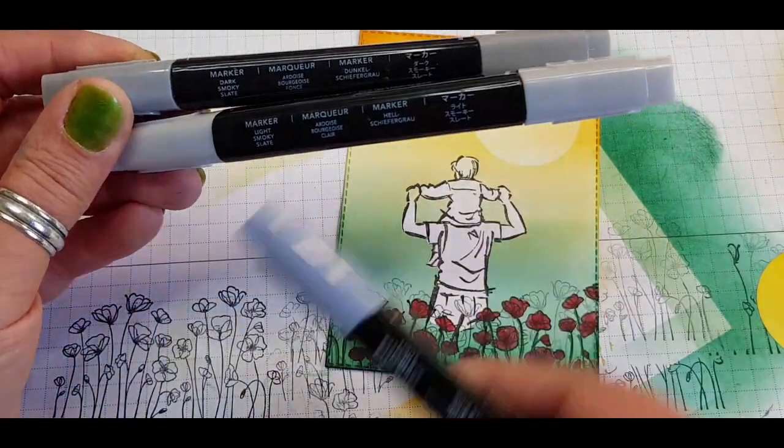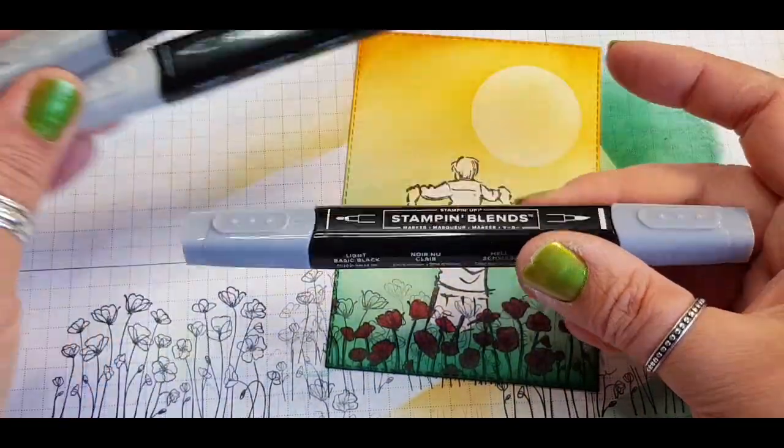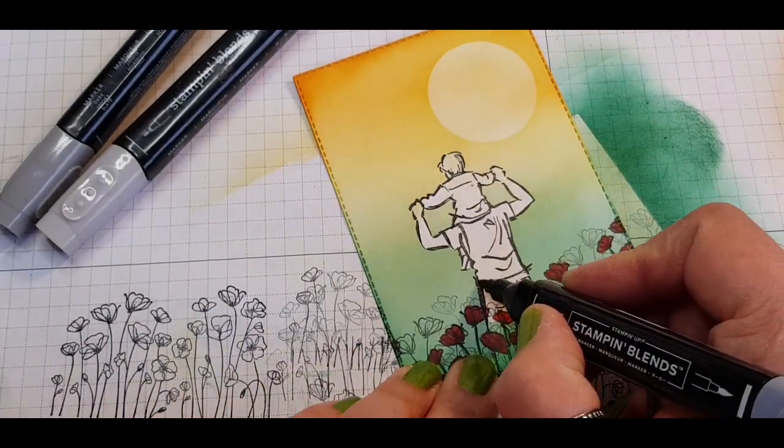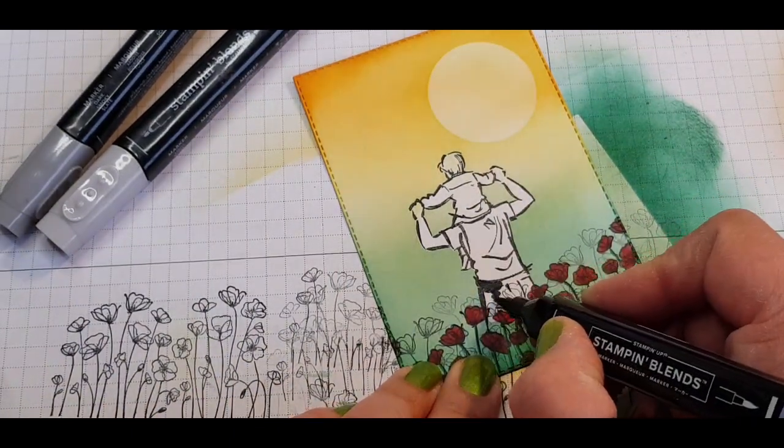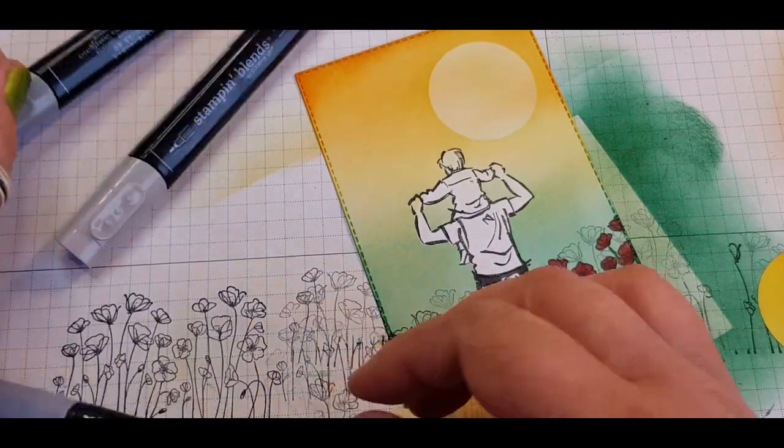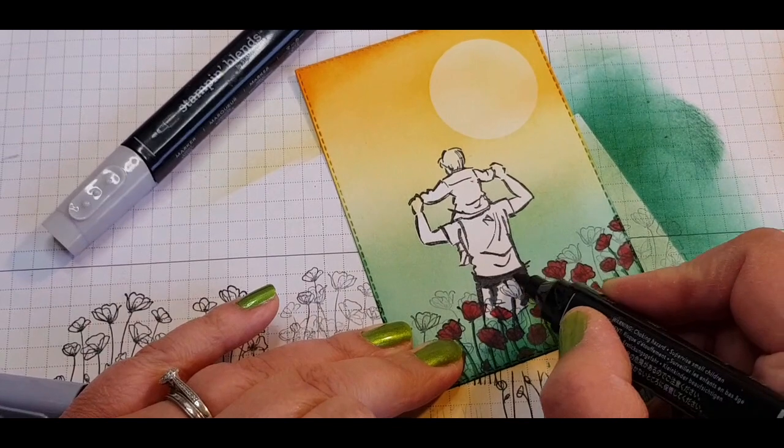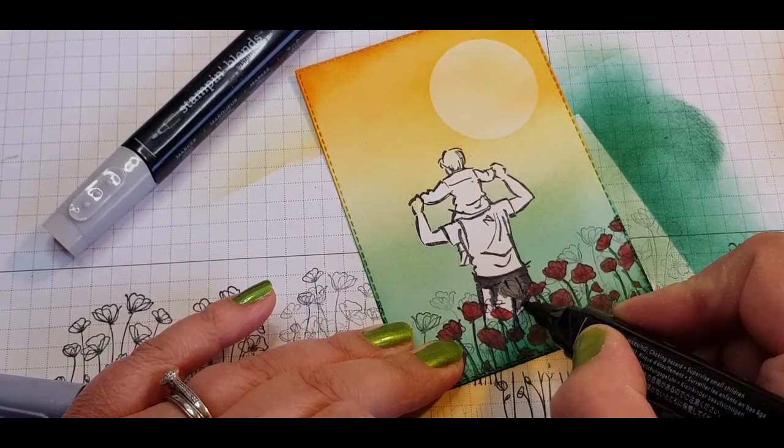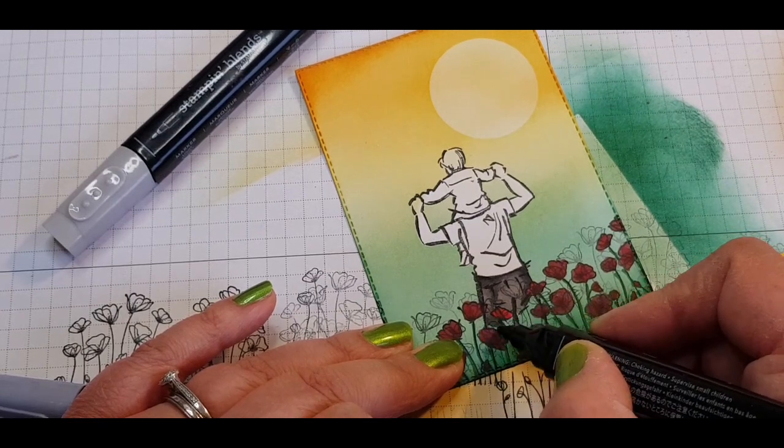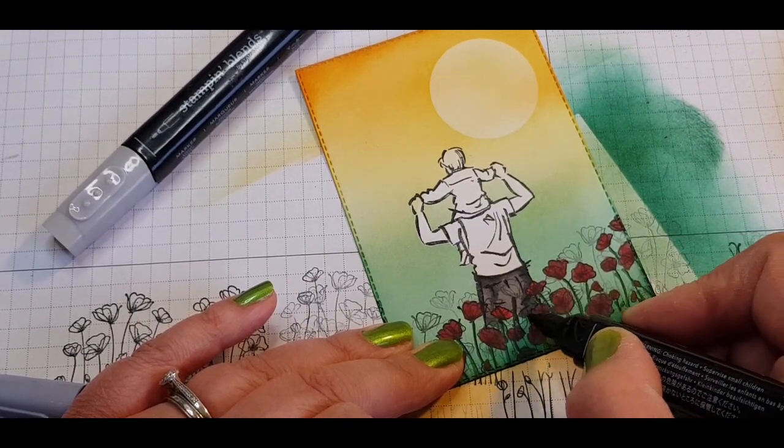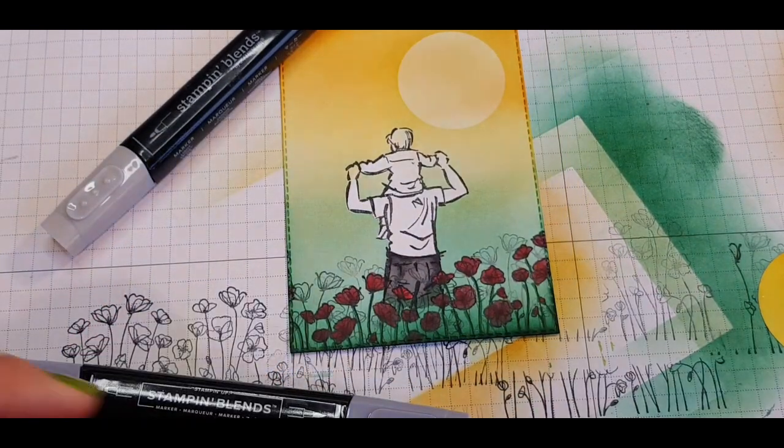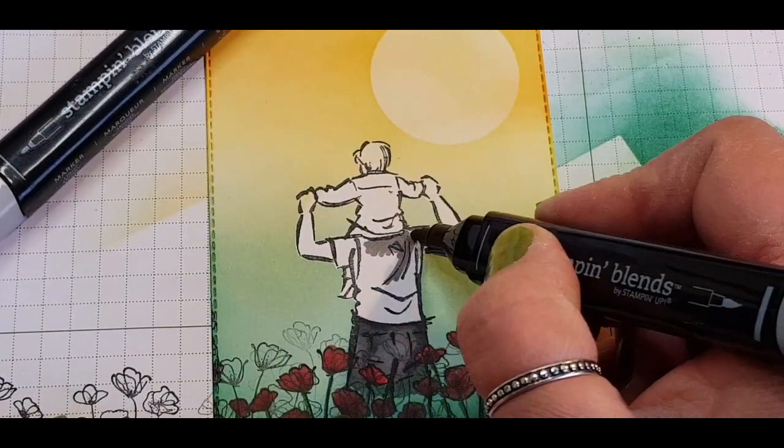Coming in now with some grey Stampin' Blends and using the different shades to shade in the masculine image. Using darker for the trousers and then coloring it in with a lighter. I had this idea of just having the figure in grey almost like a memory or an imagination. I just quite like the contrast of the black and white image against the very bright colors of the rest of the card.